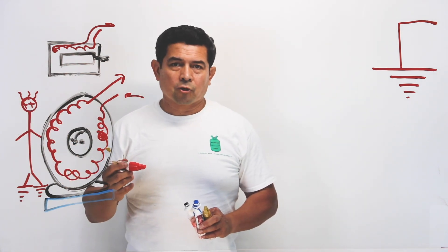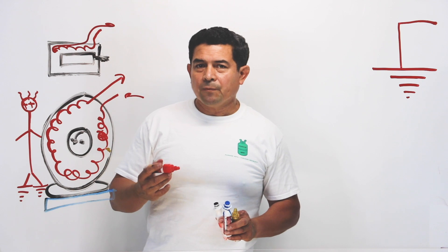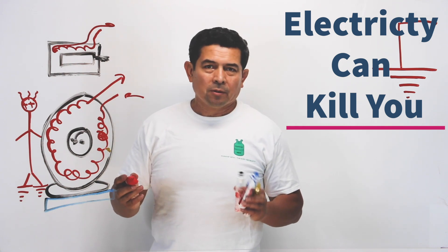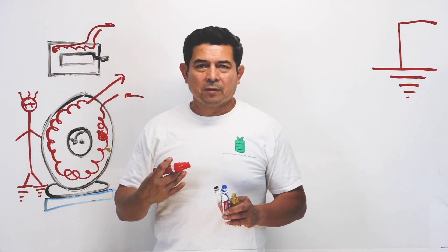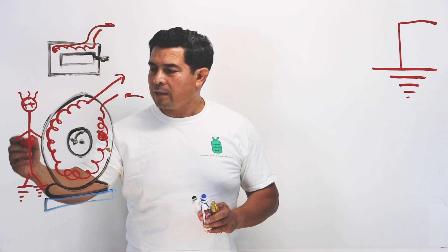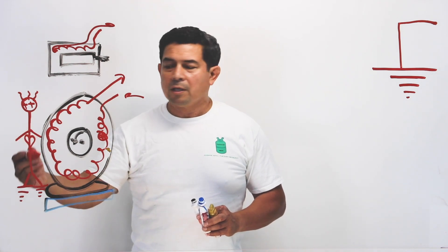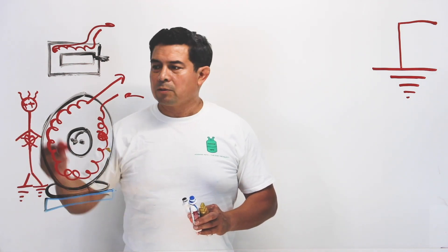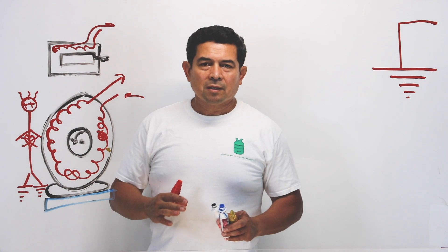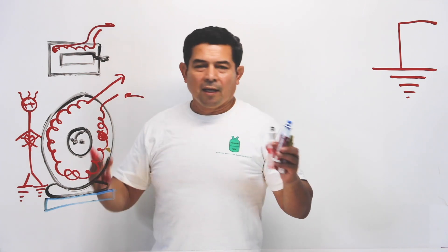What does electricity do to you? The most important thing I always tell them in class — and this is usually a test question — is that electricity can kill you. It won't always kill you, but it can. The electrical signals travel through you and through your heart, messing up the signals going from your brain to your heart. Your heart stops because it doesn't know what to do, and then you have no blood flowing to your brain.